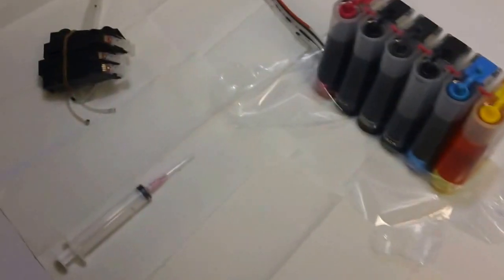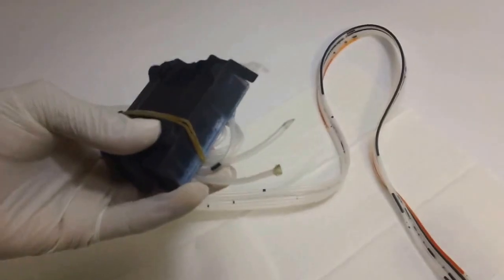This is Luis with CIS Syncs and I'm going to show you guys the easiest way to prime any sponge type cartridges. Sponge types would include certain HPs and then most or all Canons.